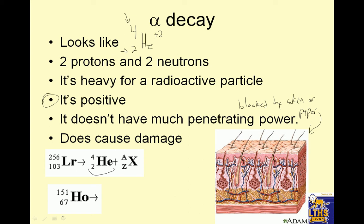Here's an example of an alpha particle. If this is lawrencium-256 and it does alpha decay, that means A would be 252 — 256 minus 4. And then the atomic number must be 101, because 2 plus 101 equals 103. 4 plus 252 equals 256. Atomic number 101 is mendelevium. Another example: if this element with mass 151 and atomic number 67 does alpha decay, it becomes mass 147 and atomic number 65, because 2 plus 65 is 67, and 4 plus 147 is 151. Atomic number 65 is terbium from the periodic table.